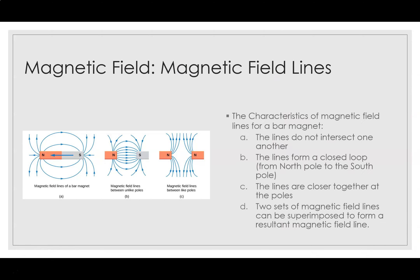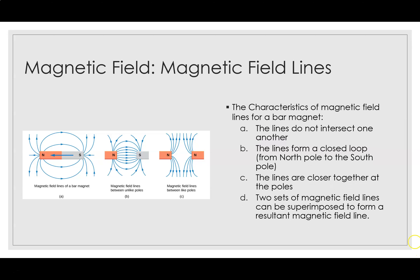Here are the characteristics of magnetic field lines for a bar magnet: (a) the lines do not intersect one another; (b) the lines form a closed loop from the north pole to the south pole; (c) the lines are closer together at the poles; and (d) two sets of magnetic field lines can be superimposed to form a resultant magnetic field.